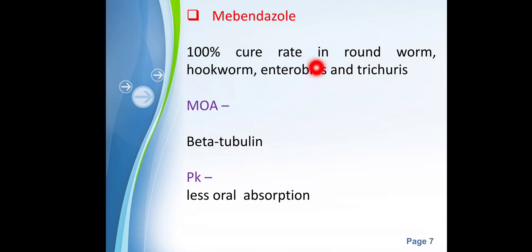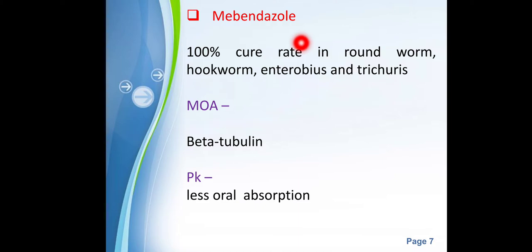The first drug is mebendazole, which is still widely used to treat helminthiasis. For certain organisms — roundworm, hookworm, Enterobius, and Trichuris — it has achieved a 100% cure rate. It is also one of the empirical treatments for parasitic infestation, meaning when you do not have a perfect diagnosis but know it is a parasitic infection, you can start this drug while waiting for the lab report.